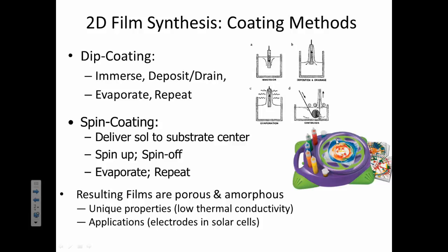So here I talk about how the resulting films can be porous and amorphous. That means without shape. These can have unique properties, though, like low thermal conductivity. They conduct electricity at low temperatures. And they have other applications, like electrodes in solar cells. And that is it for the 2D synthesis notes. Let me know in class if you have any questions.